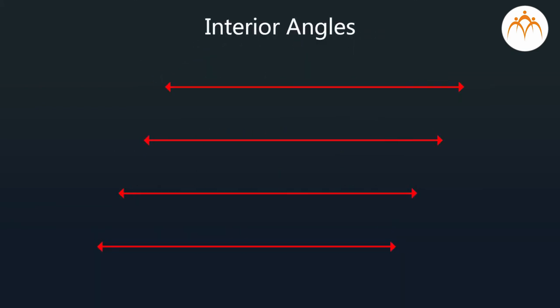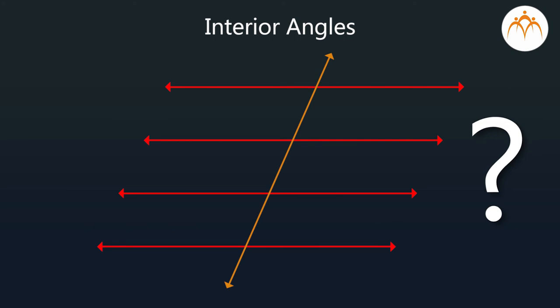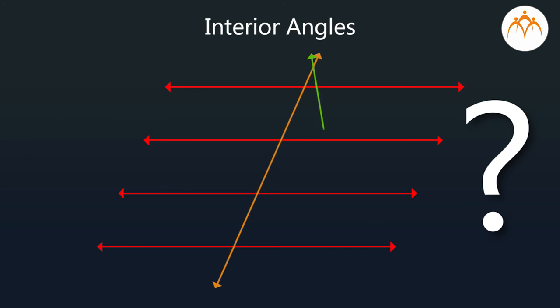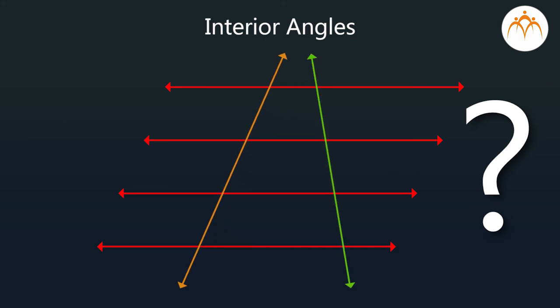If we have more than two parallel lines intersected by a transversal, how many pairs of interior angles will be formed? Will these pairs also be supplementary? And what if we have more than two parallel lines intersected by more than one transversal? Think about it.